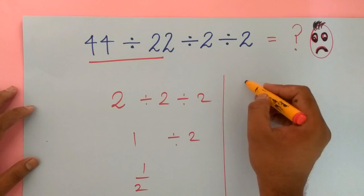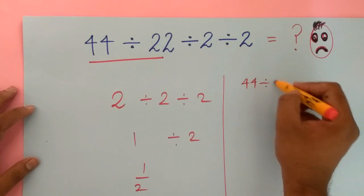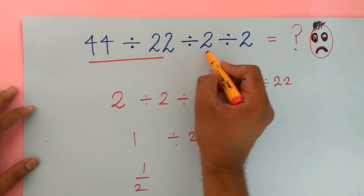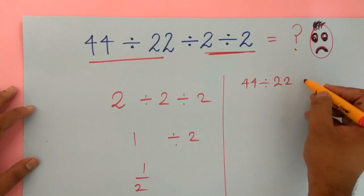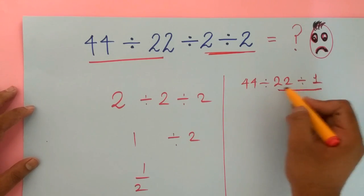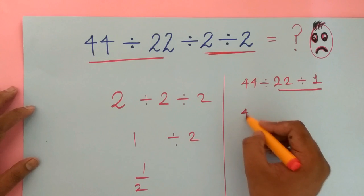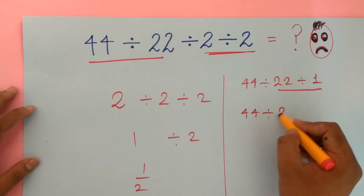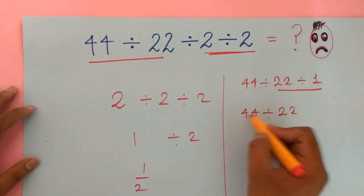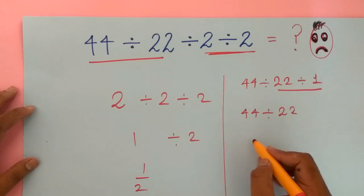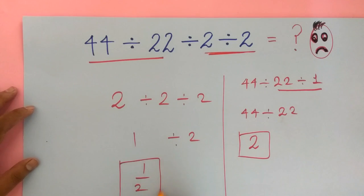answer? 44 divided by 22, 2 divided by 2 would become 1. Again right to left, 22 divided by 1, no change, 44 divided by 22 is 2. Oops, one answer is 2 and one answer is 1 over 2.